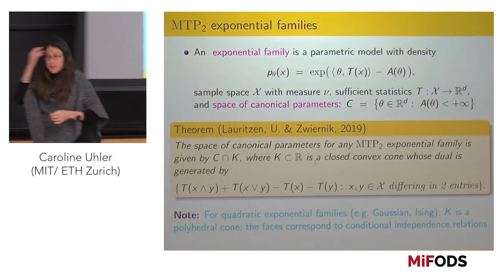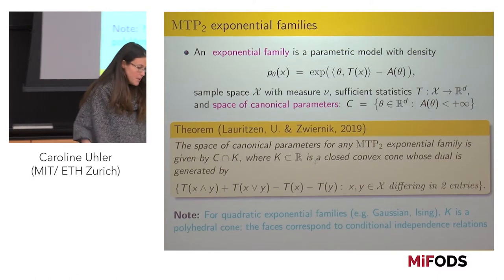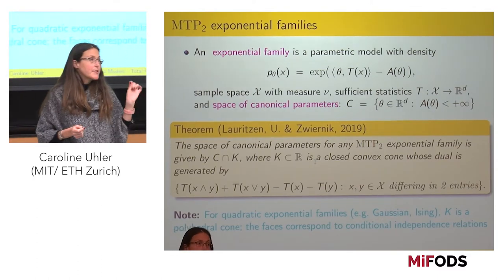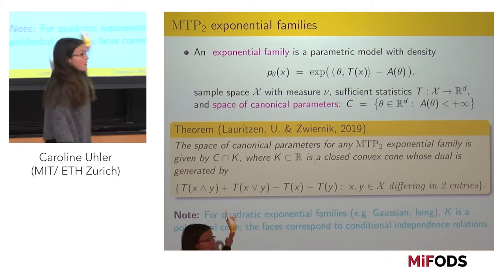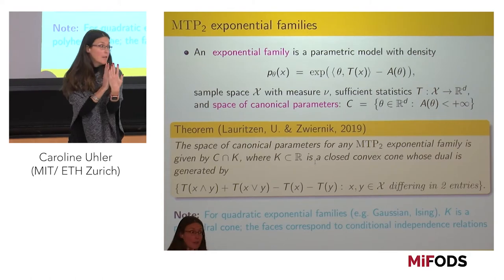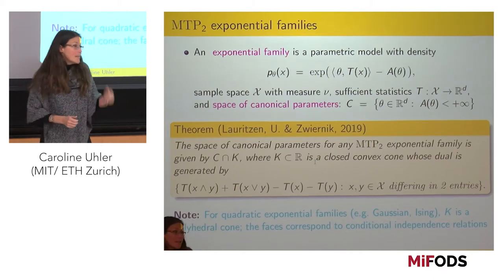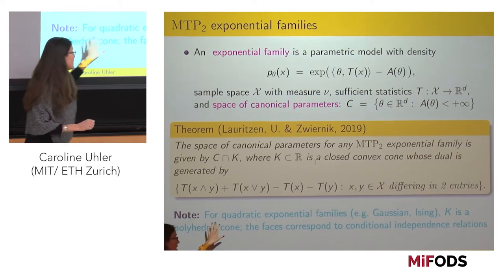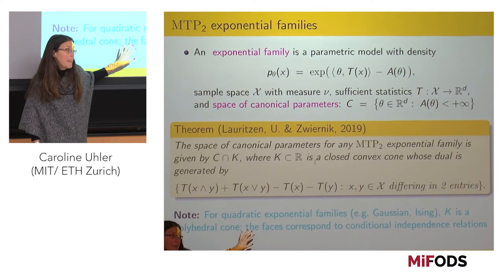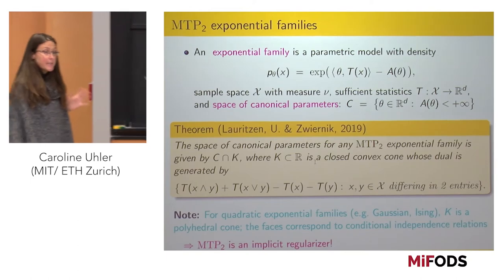In the Gaussian setting: what does it mean to be MTP2? The constraint is that all entries in the inverse covariance matrix are smaller or equal to zero. So the polyhedral cone is just the negative orthant. When do you have a zero in the inverse covariance matrix? Zeros mean that Xi is independent of Xj given everything else. The same holds for any quadratic exponential family. This directly shows that MTP2 is actually a very nice implicit regularizer.